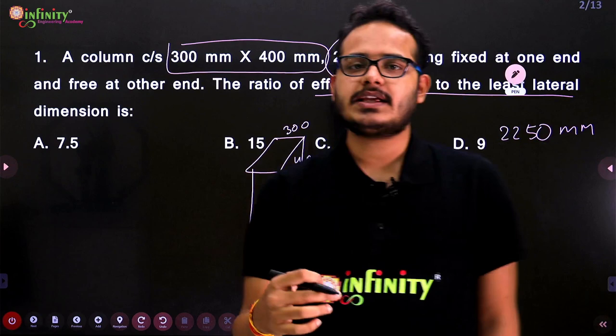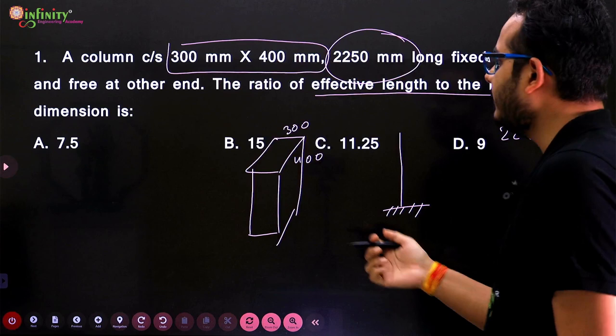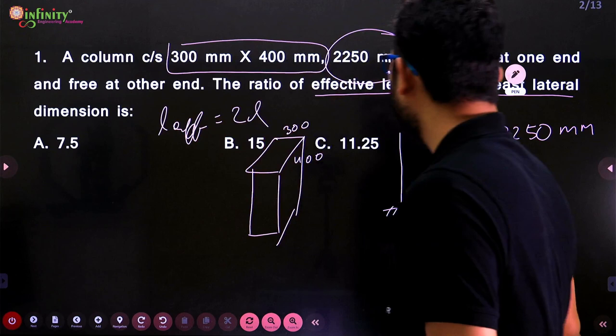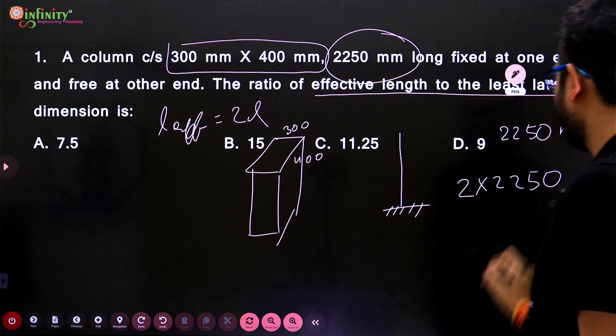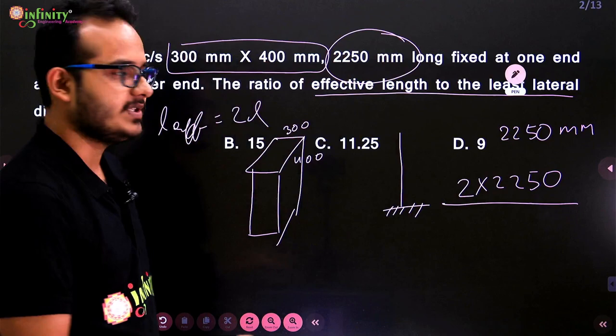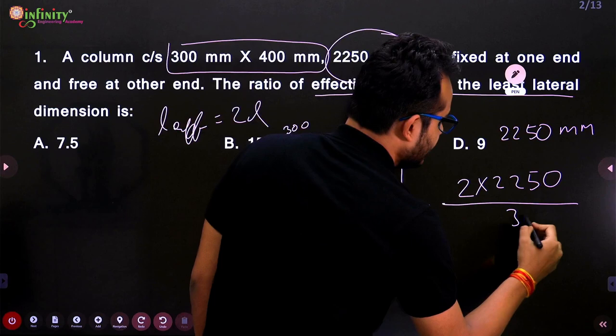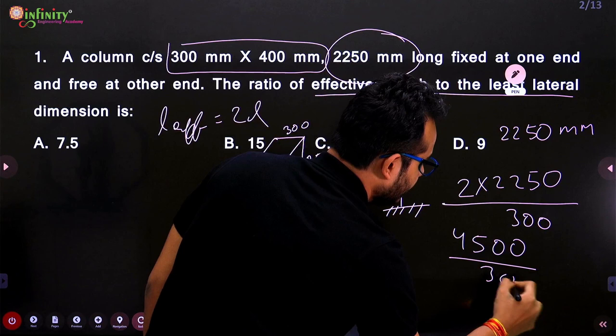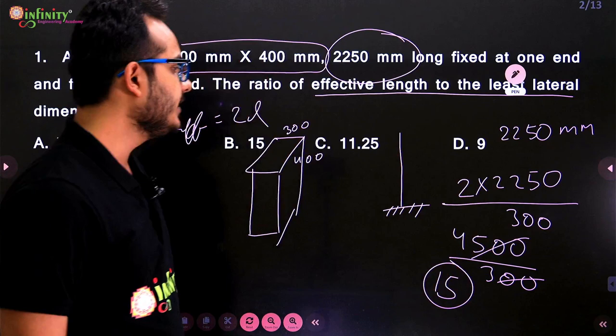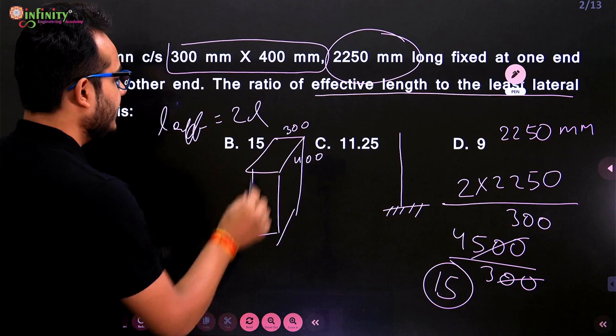We have to find the ratio of effective length to the least lateral dimension. When one end is fixed and the other is free, the effective length L_eff = 2 × L. So L_eff = 2 × 2250 = 4500 mm. The least lateral dimension is 300 mm (smaller of 300 and 400). Therefore, the ratio = 4500 / 300 = 15. The answer is (b).